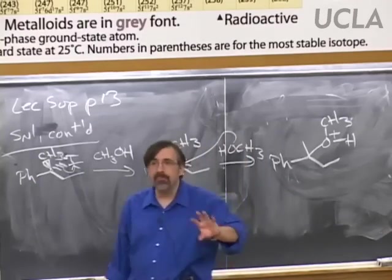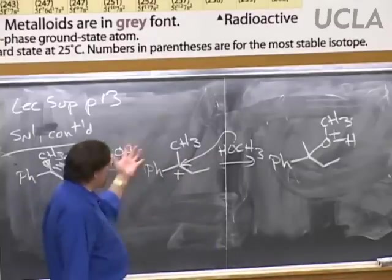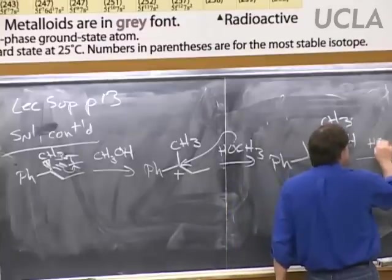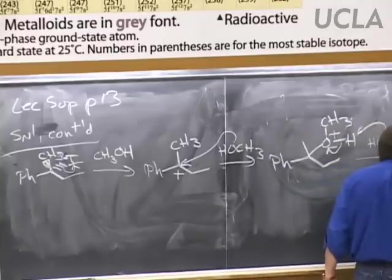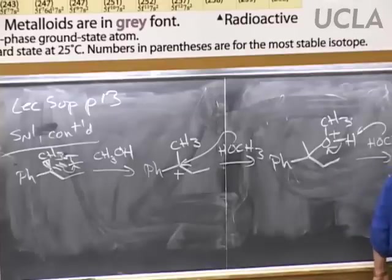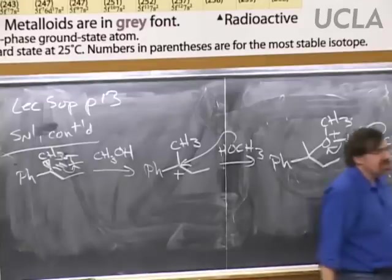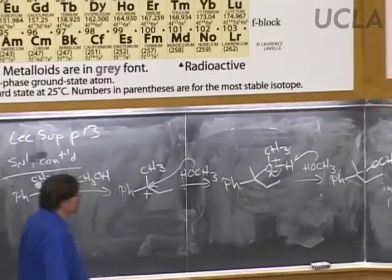The major product comes from inversion — attacking the backside of where the carbon-leaving group bond was — because of the iodide having some steric hindrance with the carbocation. We finish the mechanism with a deprotonation of the oxonium ion to give the ether, again a mixture with inversion being the major product and retention of the initial stereochemistry being minor. We don't know the exact ratio — maybe 99:1, maybe 50.01:49.99 — but inversion is the major one.